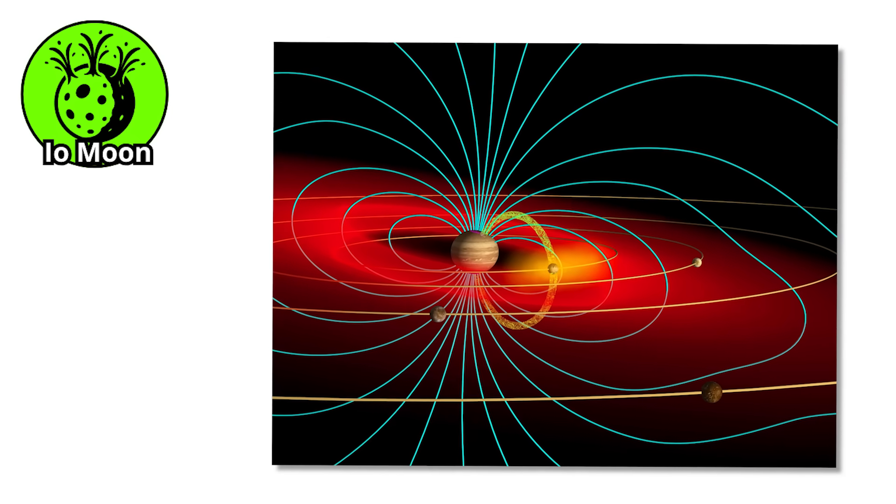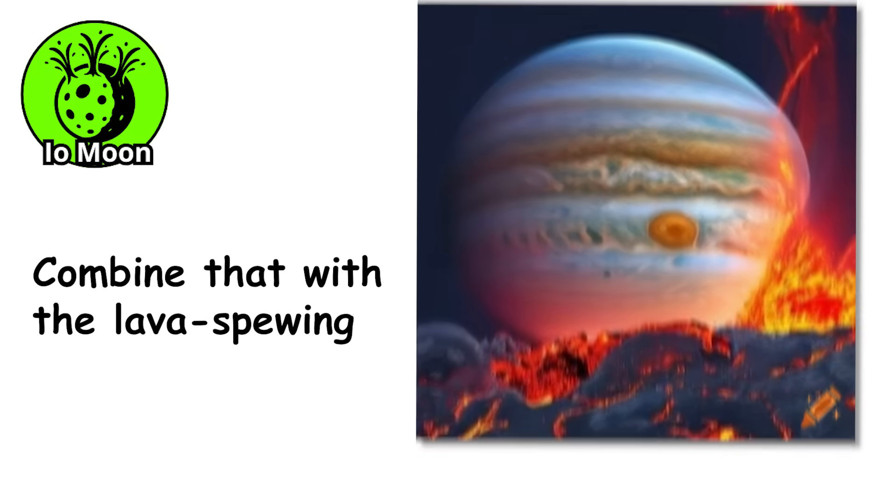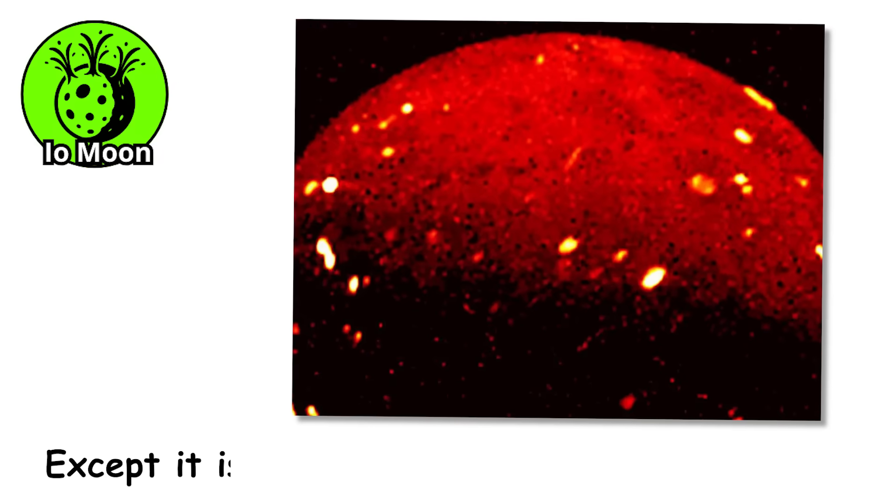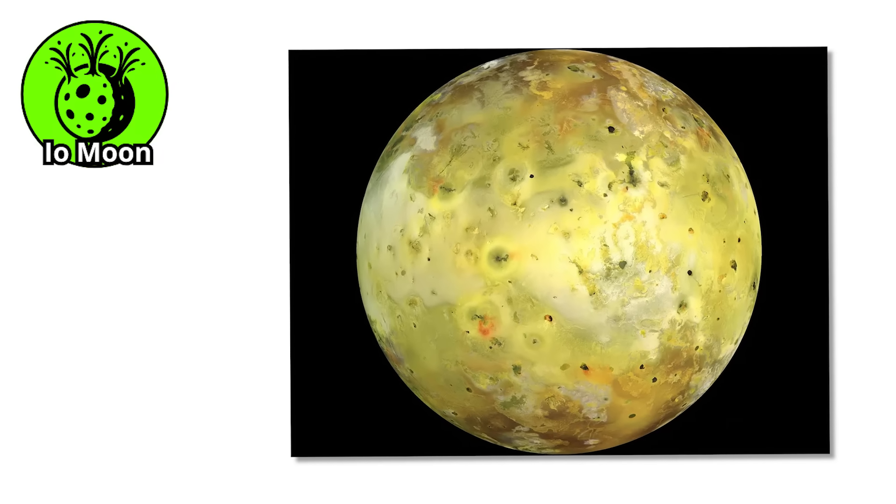On top of that, Io sits inside Jupiter's deadly radiation belt. If you were standing on the surface, you would receive a lethal dose of radiation in minutes. Combine that with the lava spewing volcanoes, and you have a moon that looks like a sci-fi movie set, except it is very real and extremely dangerous. And just when you think it cannot get any worse, we are about to shrink the size and crank up the danger. Welcome to the world of neutron stars.